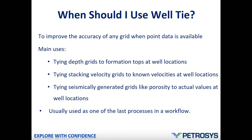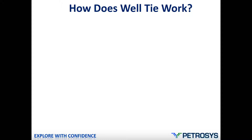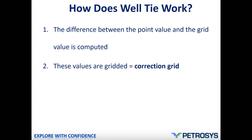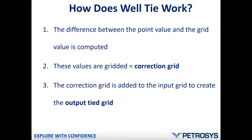Usually Well Tie is one of the last processes in a workflow. So how does Well Tie work in Petrosys? First of all, the difference between the point value and the grid value is computed. Then these values are gridded and this way we get the correction grid. Anytime we do Well Tie in Petrosys we get two output grids: the tied output grid and the correction grid. The tied output grid is computed by adding the correction grid to the input grid.